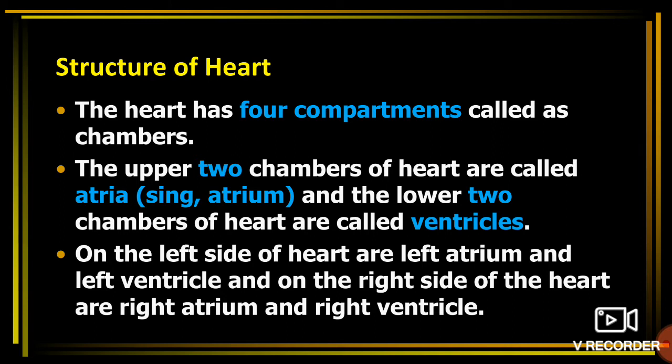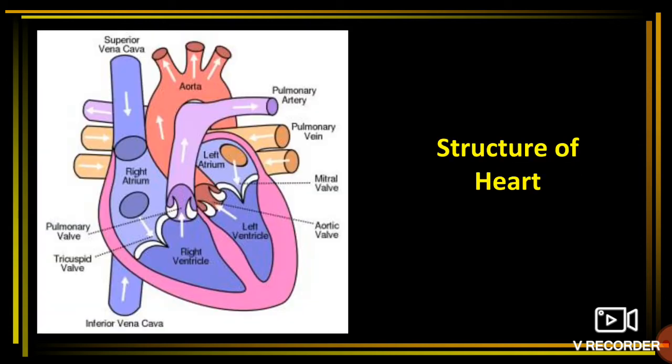In this part we are going to talk about the internal structure of the heart. Internally, it is divided into four compartments — each compartment is known as a chamber. There are two upper and two lower chambers. The two upper chambers are known as atria (singular: atrium), and the two lower chambers are known as ventricles. On the left side are the left atrium and left ventricle; on the right side are the right atrium and right ventricle.